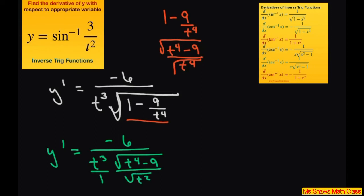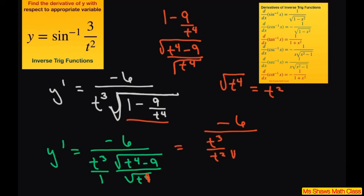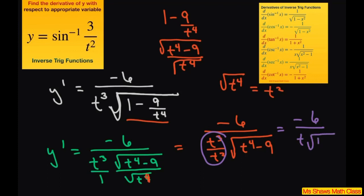The t cubed is like t cubed divided by 1. When you take the square root of t to the fourth, that gives you t squared. So we get negative 6 times the square root of t to the fourth minus 9, and dividing t cubed by t squared just gives you t. Our final answer is negative 6 divided by t times the square root of t to the fourth minus 9.